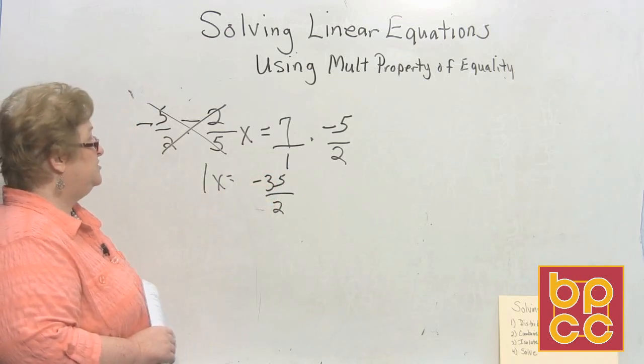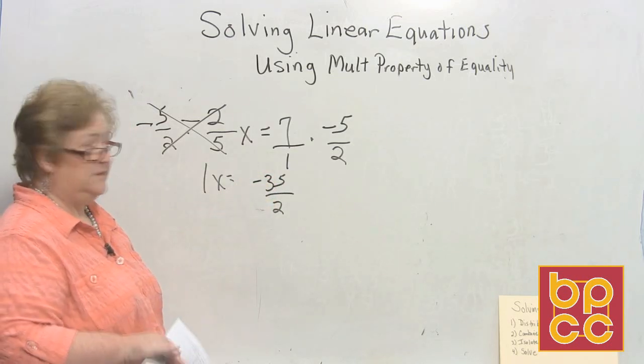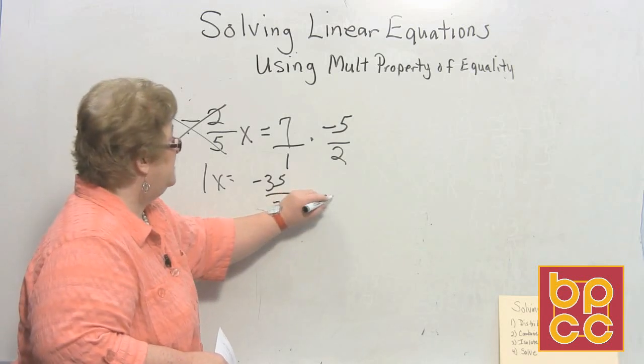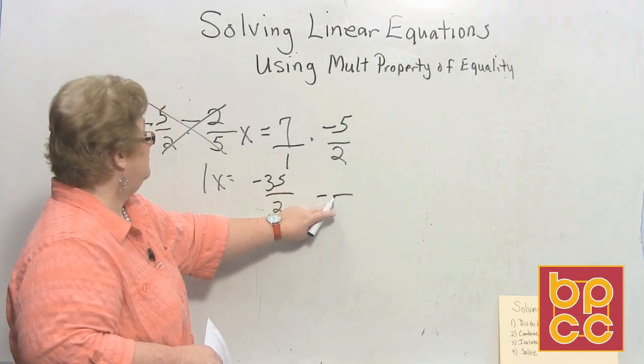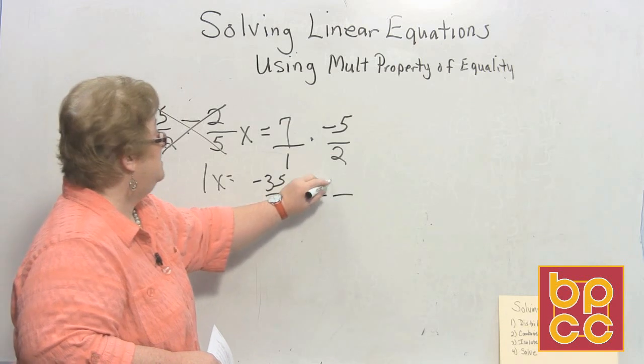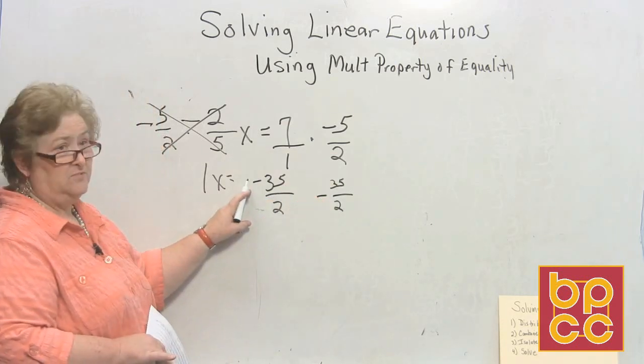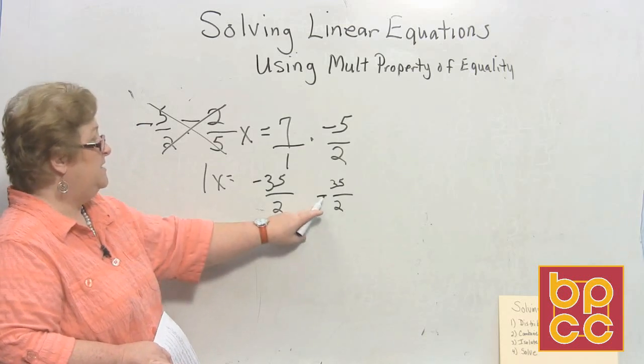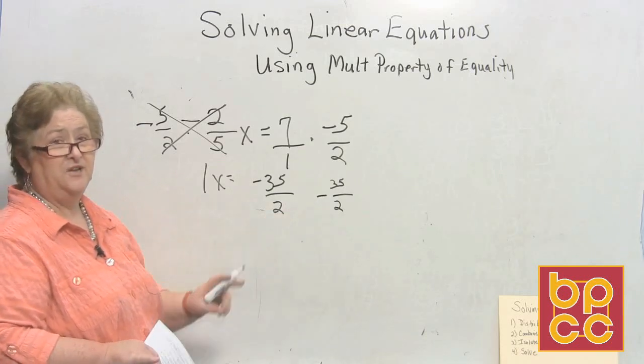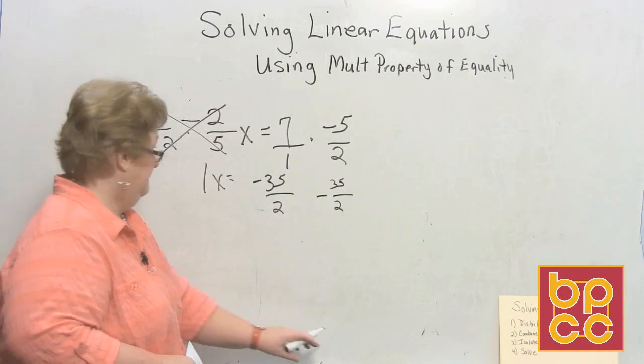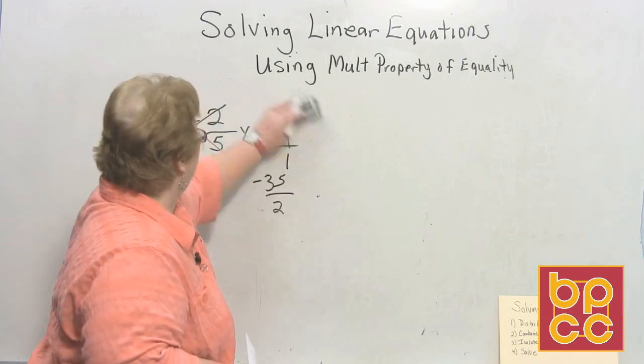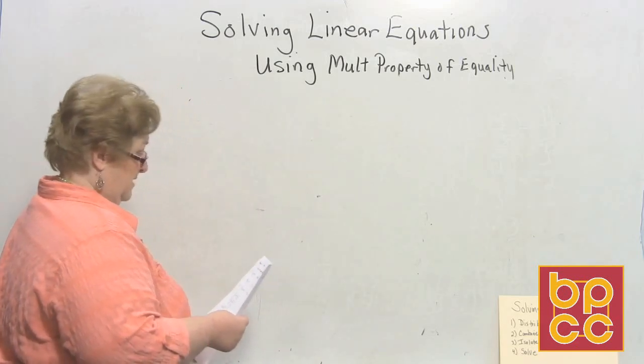Sometimes you will see in literature that they'll put the negative right smack dab on the, even with the line. It just means that one of them is negative. So I may put it on top, I may put it on bottom, or I may just put it smack dab in the middle. It still means one of them is negative.